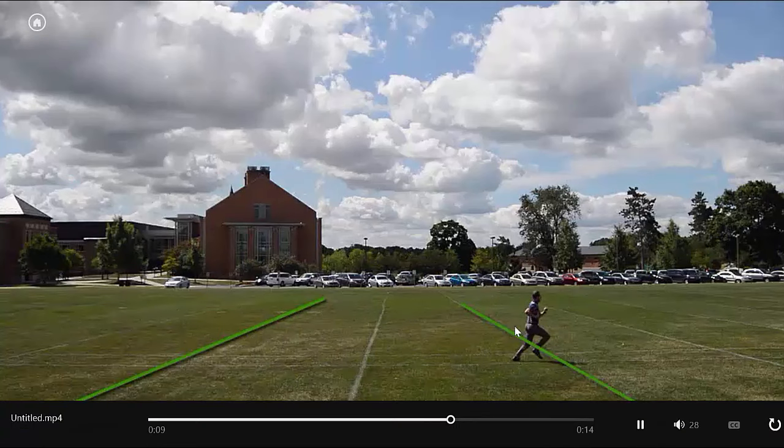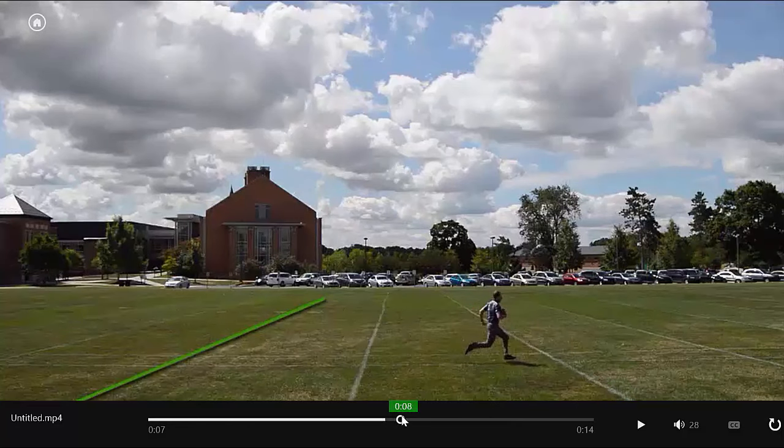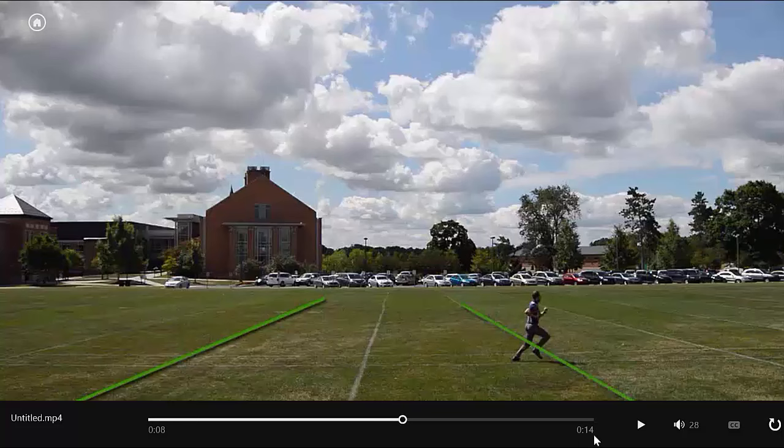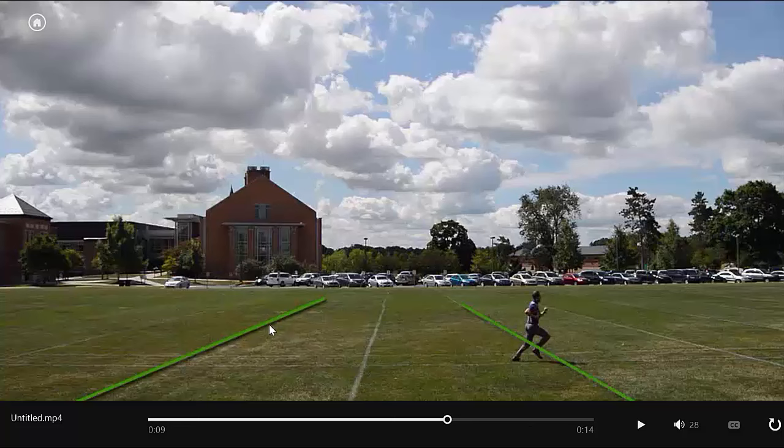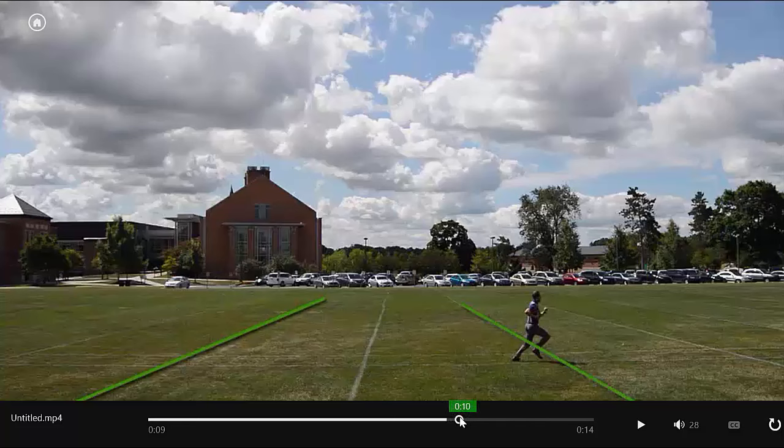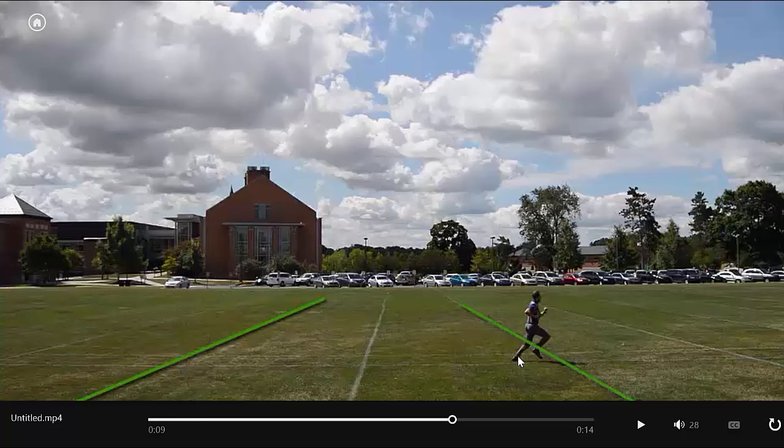And then our second point is going to be right here where I crossed the line again. And again, we're going to have to look at approximately where that happens. That happens at about 0.08 seconds. So it takes me about two seconds, I would say, to run that distance. So that's our time. And the distance is approximately, let's see, about 10 yards or so, because these are five yard markers. So with that information, we can go ahead and go over to our whiteboard and figure out what my velocity is.